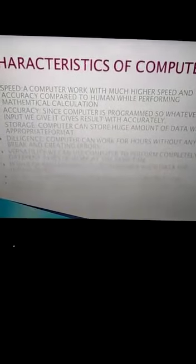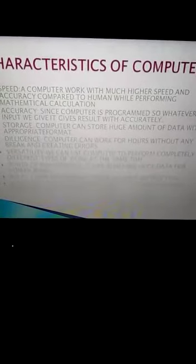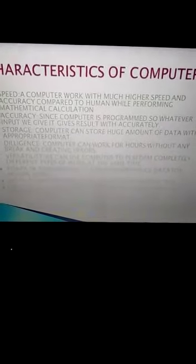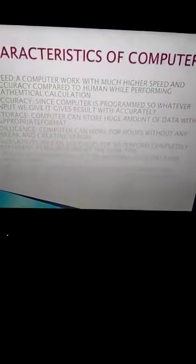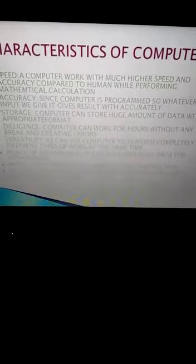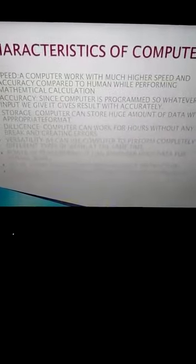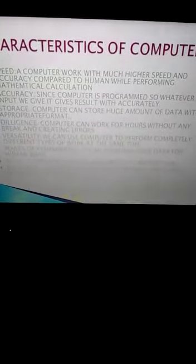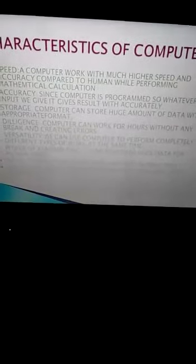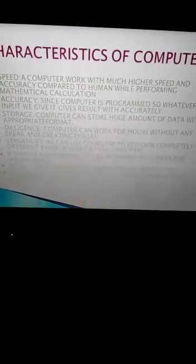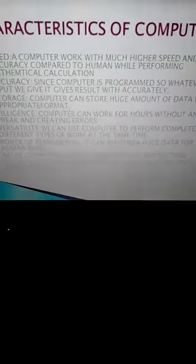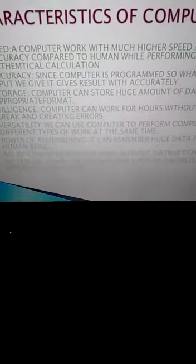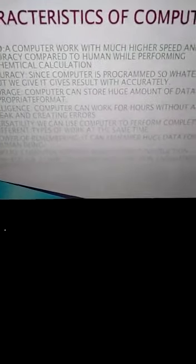Next is diligence — a computer can work for hours without any break and without creating errors, unlike human beings who get tired after 8 to 10 hours and start making mistakes. Next is versatility — we can use a computer to perform completely different types of work at the same time. Next is power of remembering — a computer can remember a huge amount of data. There is no IQ; for every task we must give instructions to the computer.